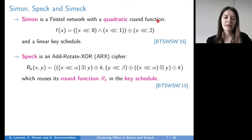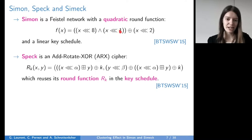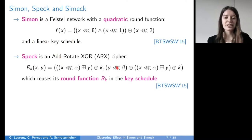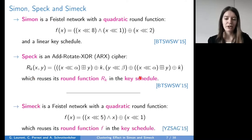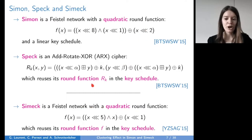Simon is a Feistel network with a quadratic round function, made of a left rotation of 8 bits and a left rotation of 1 bit. Those two are ANDed bitwise, and the result is XORed to X rotated by 2 bits to the left. Simon has a linear key schedule. Speck is an Add-Rotate-XOR cipher, and it reuses its round function in the key schedule. CIMEC is also a Feistel network with a quadratic round function very similar to Simon's, but with rotation amounts 5, 0, and 1 instead of 8, 1, and 2. CIMEC also reuses its round function in the key schedule.